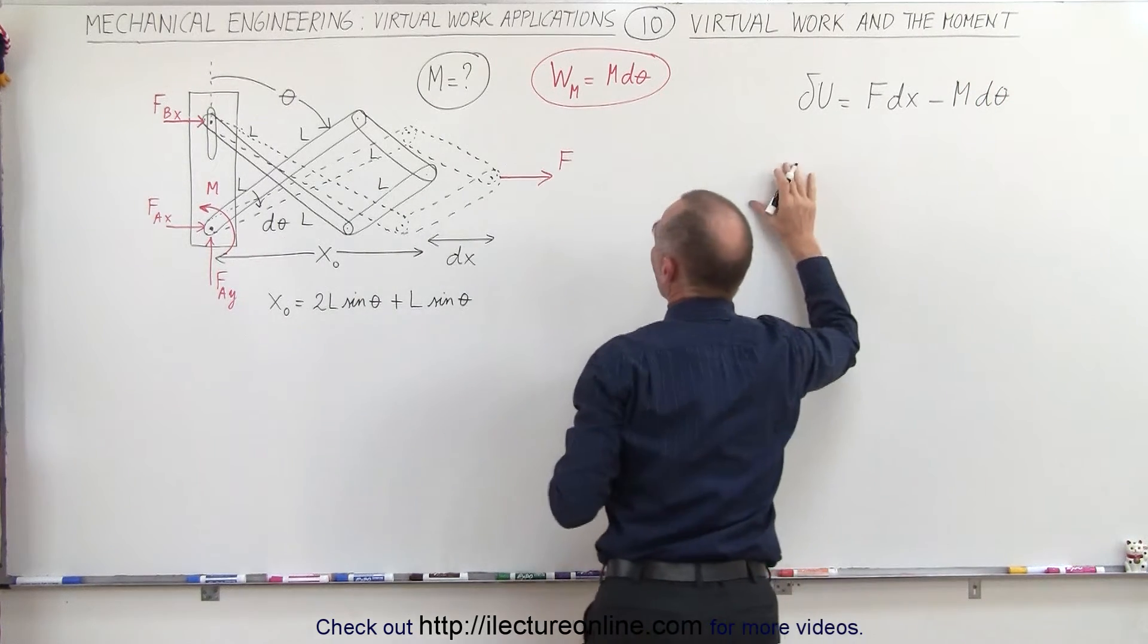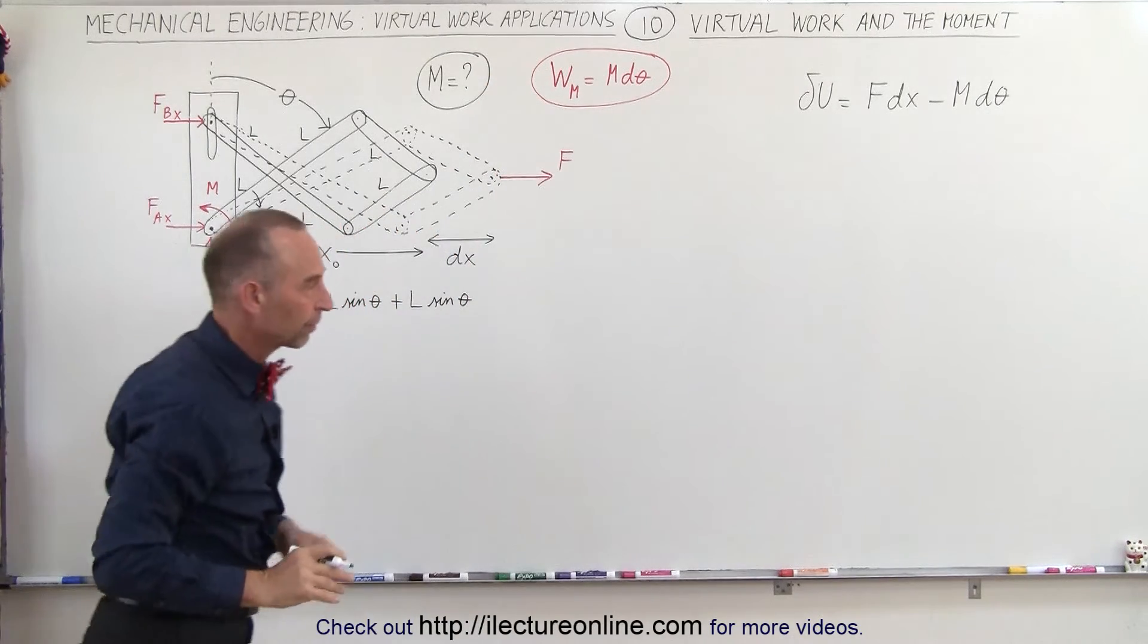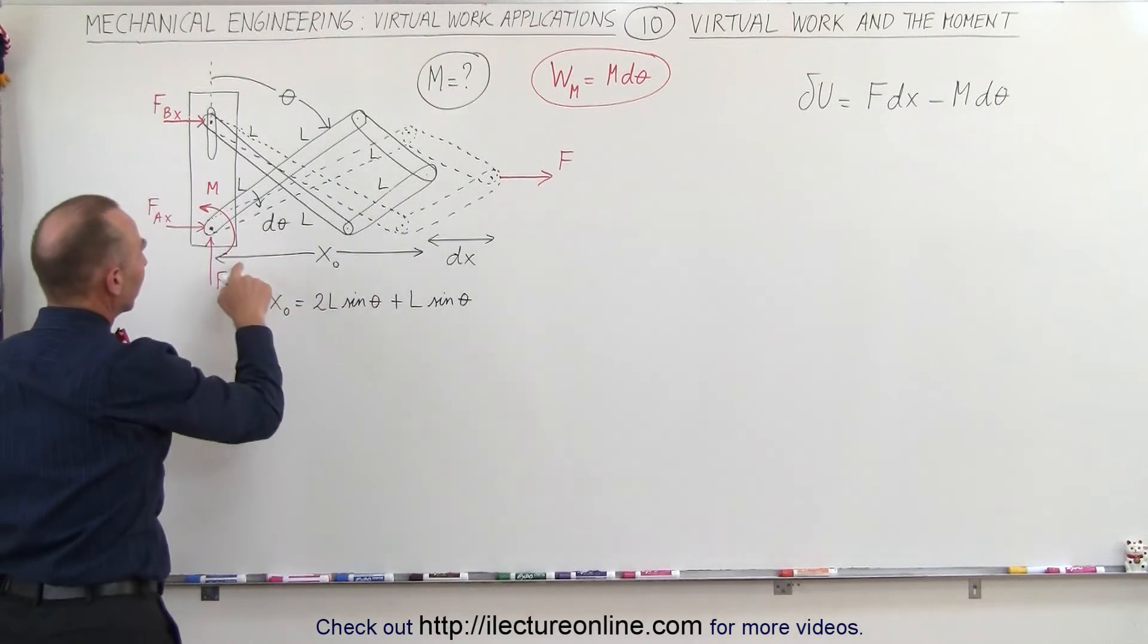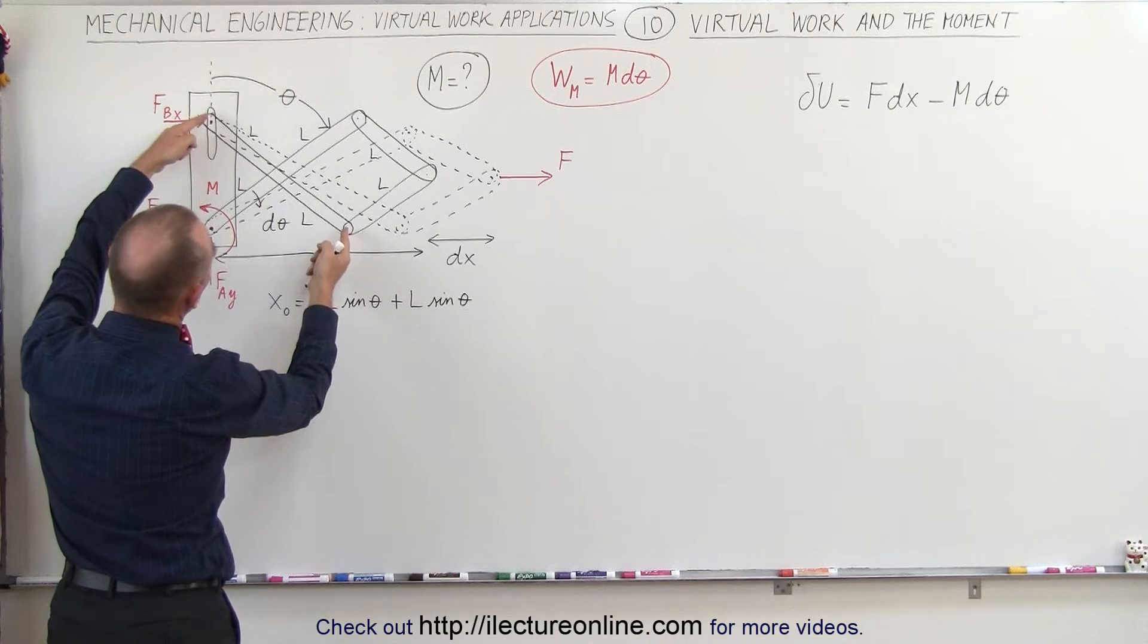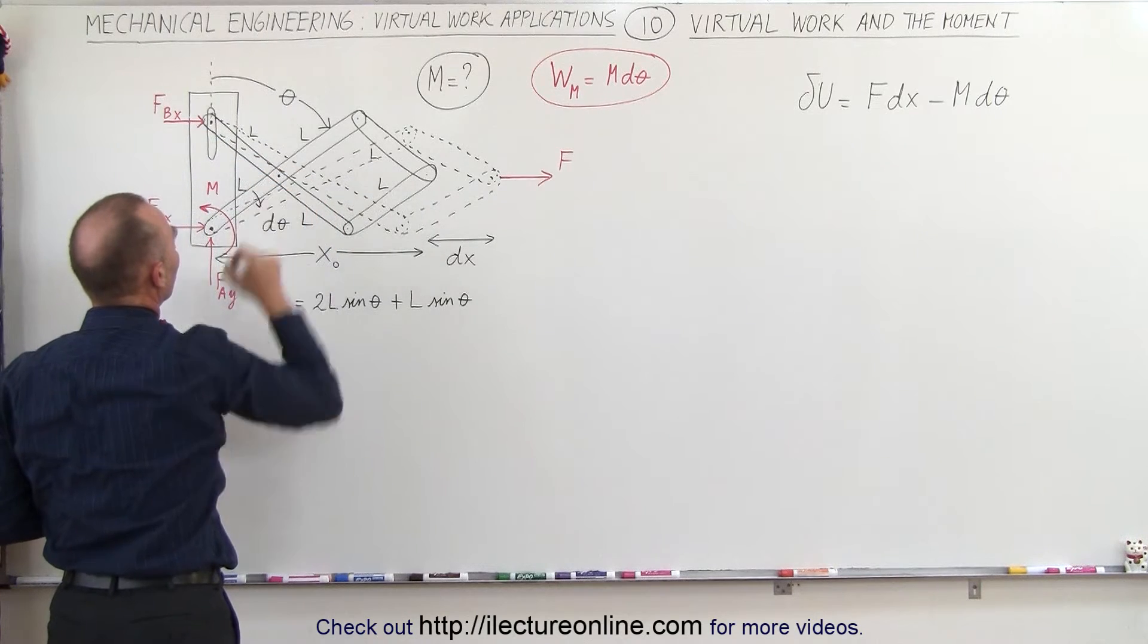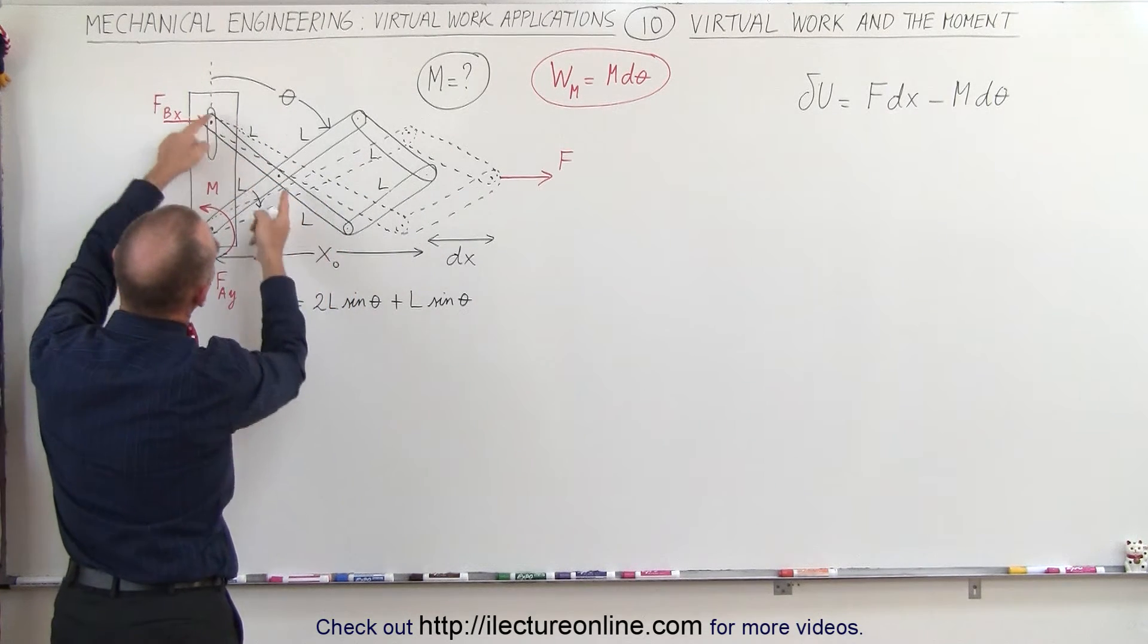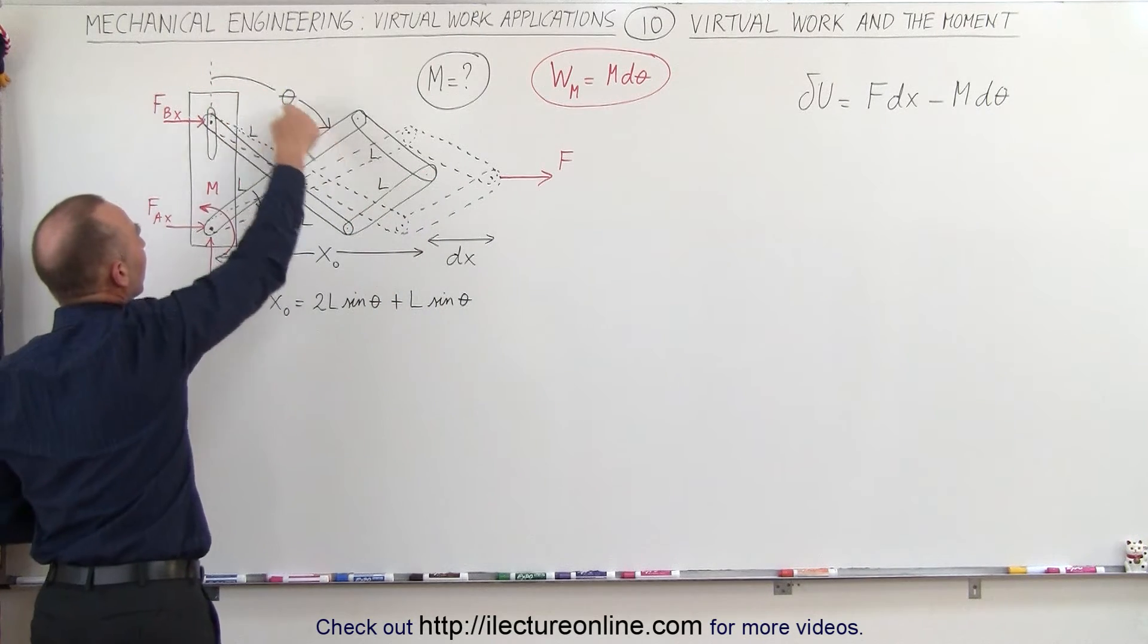Notice the objective here is to find the magnitude of the moment based on doing virtual work. So starting out with calculating the initial distance x₀, notice that the length of these are L from there to there and L from there to there. This is L, this is L and this is L. The angle θ is over here.